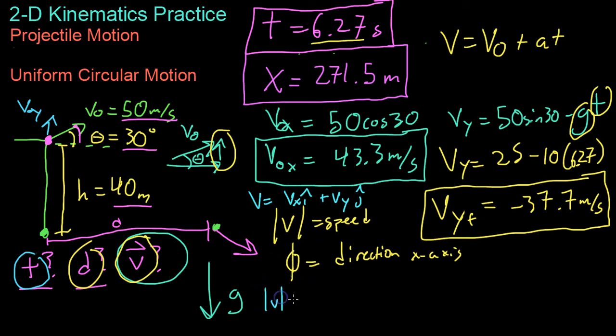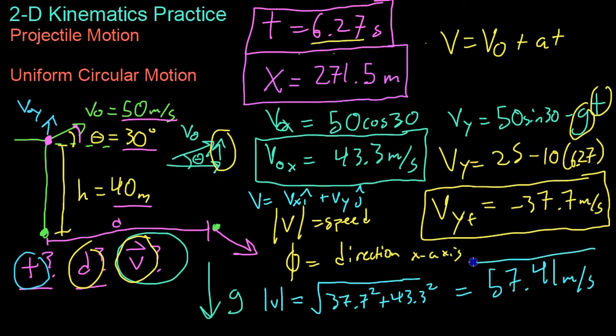To find the speed, all we have to do is the Pythagorean theorem. So, root 37.7 squared plus 43.3 squared. And so, the speed comes out to be 57.41 meters per second.